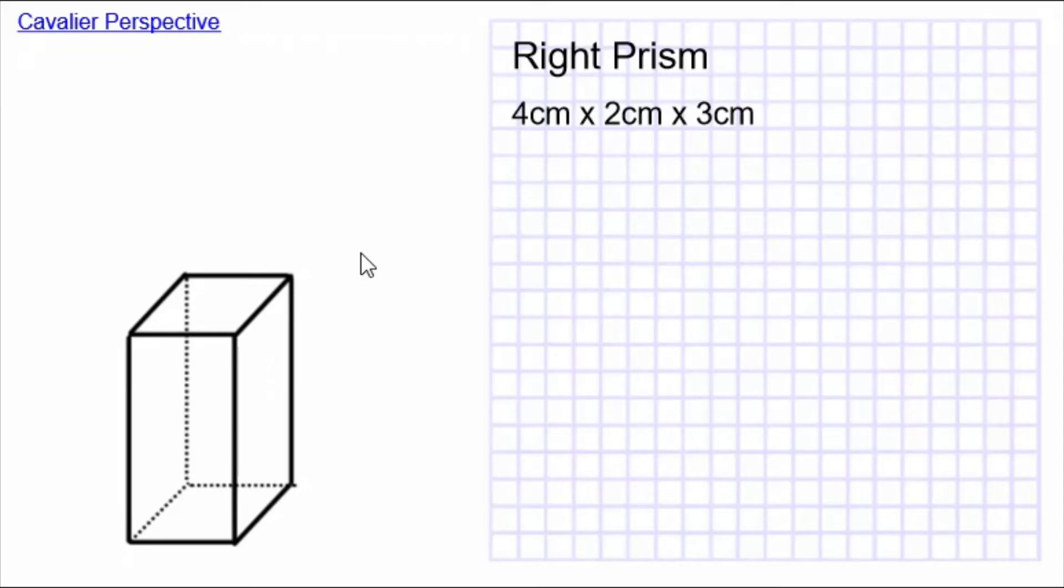Here we're drawing a right prism. This right prism is 4 cm by 2 cm by 3 cm. And the trick to that is when we look at a drawing of it, we can make two of those dimensions accurate, but the third one is misleading if we make it accurate.